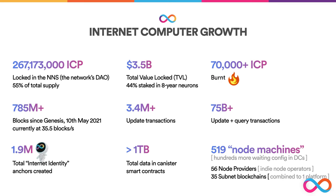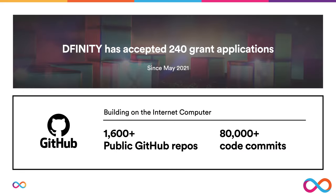There are currently hundreds more node machines in data centers waiting for configurations, with 56 independent node providers. There are currently 35 subnet blockchains — don't confuse these with what you see on other blockchains; Internet Computer subnets combine together to make a single unified blockchain environment using chain-key cryptography. In the past year, DFINITY has accepted 240 grant applications. There are more than 1,600 public GitHub repos containing Internet Computer code, and there have been more than 80,000 code commits — an astounding achievement.